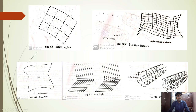The Coons surface is a surface with a closed boundary curve. Unlike Bezier or B-spline surfaces which may be open or connect different data points, the Coons surface is a closed surface with four boundary curves. Also, a fillet surface is a B-spline surface formed by blending two B-spline surfaces together.